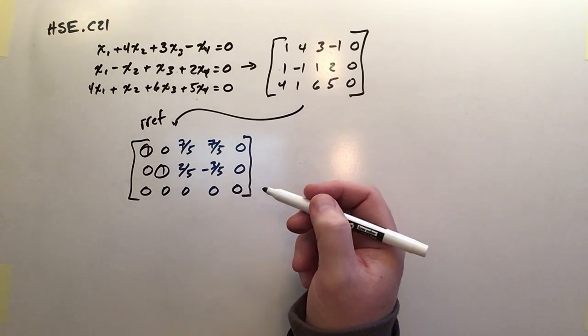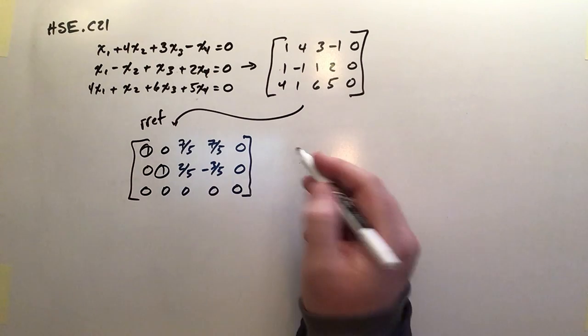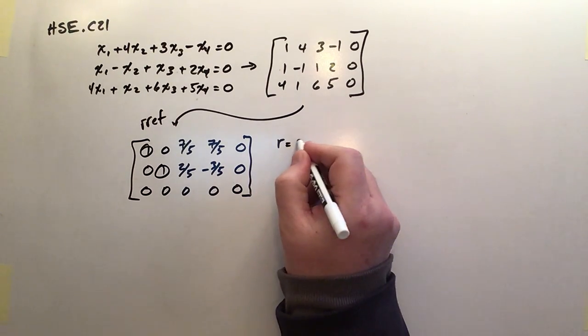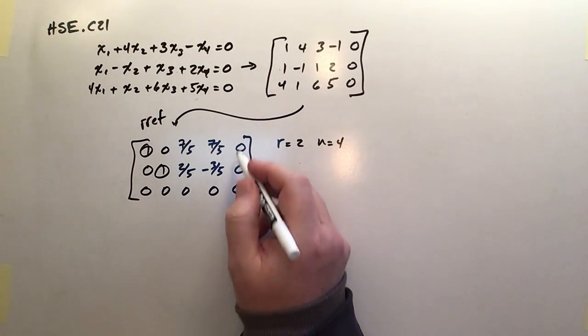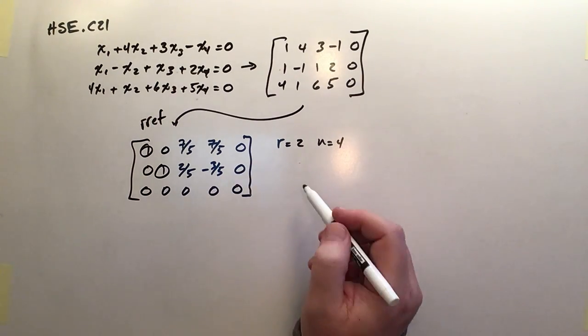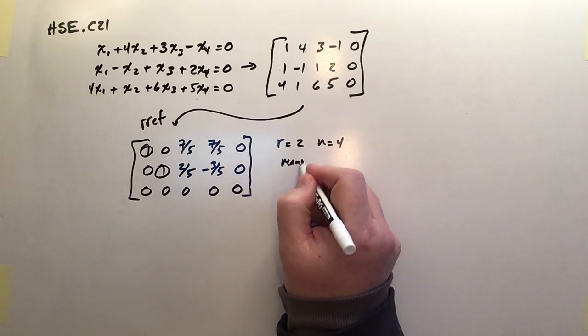So that is, in essence, what I get to do here. There are many solutions to the system. I can tell that because r is equal to two, where n is equal to four. But because I don't have a pivot in the last column, there isn't no solution. So that means there's many solutions.